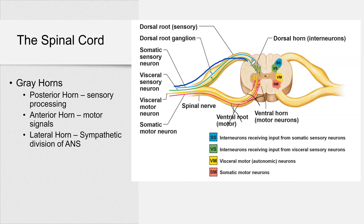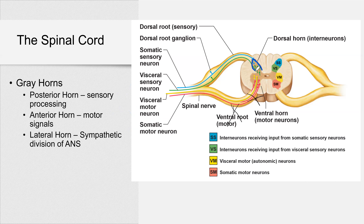Those green neurons are interneurons, and they send impulses to motor neurons. Shown in red is the somatic motor neuron — this one is going to innervate your skeletal muscles and you will have conscious control of it. The yellow one is your visceral motor neuron, so it will innervate your smooth muscle and cardiac muscle, and you will not have conscious control. So: posterior horn — sensory processes; anterior horn — motor signals.